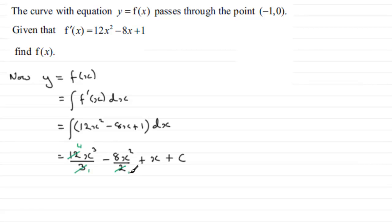And 2 will go cleanly into 8 four times. So what we have then is that this equals 4x³ - 4x² + x + c.